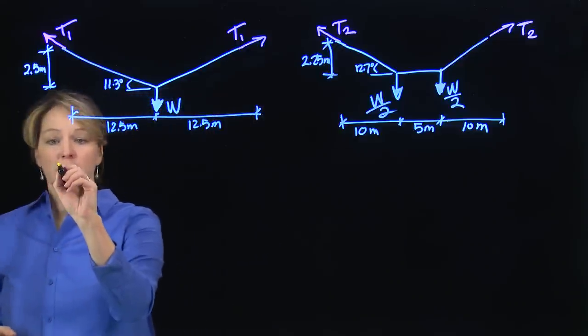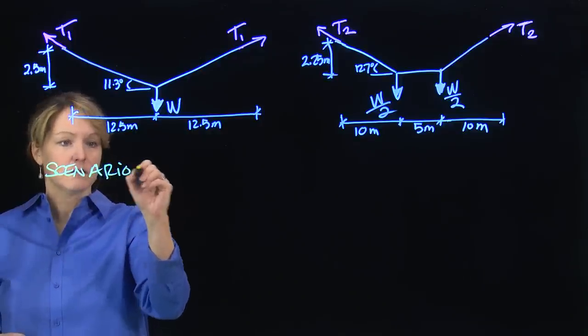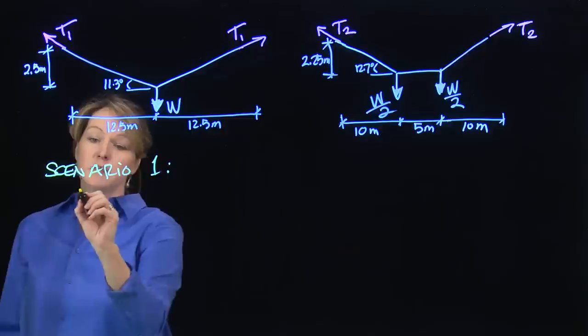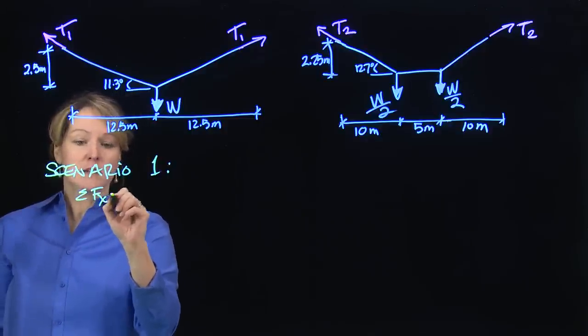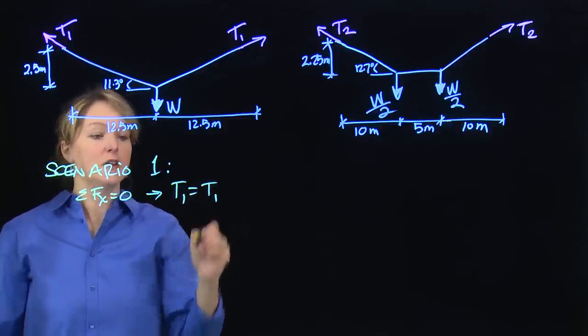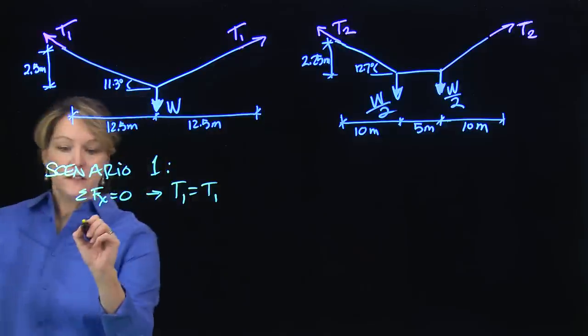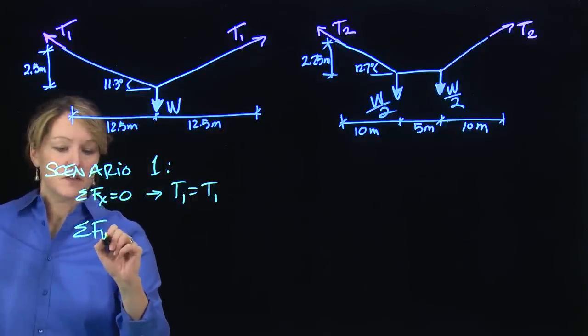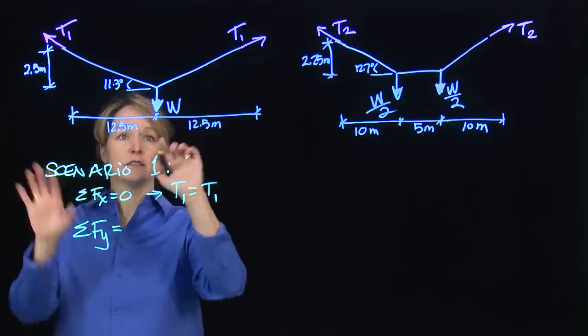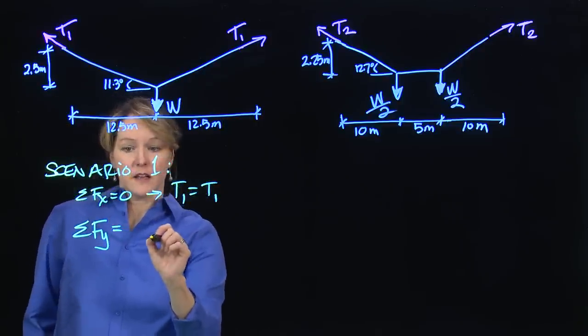For scenario one, I'm not going to do horizontal equilibrium. If I did do horizontal equilibrium set equal to zero, I would just find that T1 equals T1, which I've already designated by giving them the same label. Really, what's going to help me is the sum of forces in the y direction. The horizontal equilibrium is balanced since they're equal loads right in the center with an equal angle.